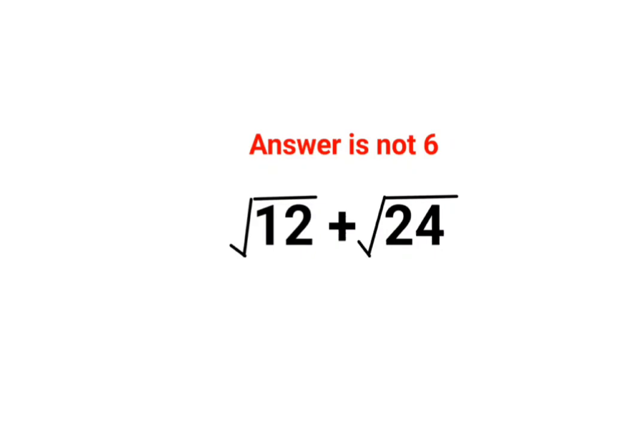Welcome everyone. A lot of people thought that the answer for this question is supposed to be 6 because they just added 12 plus 24 under the root. So √12 + 24 can be written as √36, and √36 is 6.